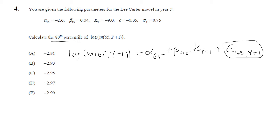This epsilon term is sufficiently small and is not given, so we can eliminate it. Next, we have alpha_65 and beta_65, but we do not have k(y+1).